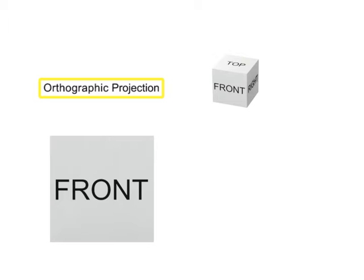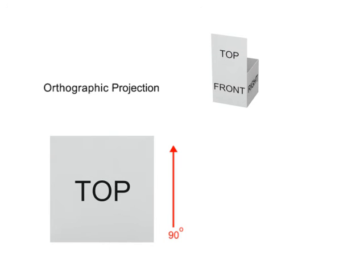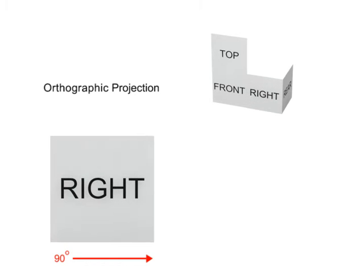In this method, each view is related by 90 degrees of separation. For example, the front view is rotated 90 degrees from the top, the top view is rotated 90 degrees from the side, and so on.